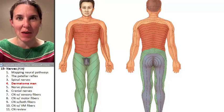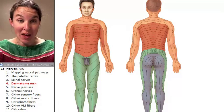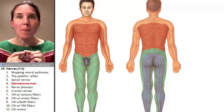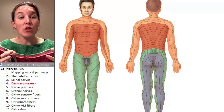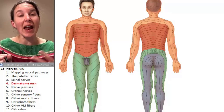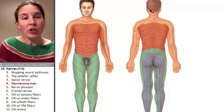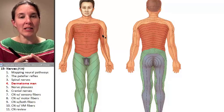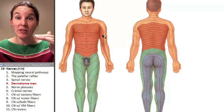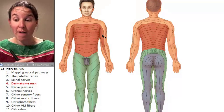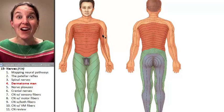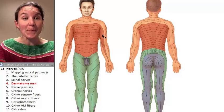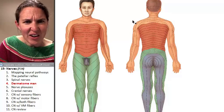This is my friend Dermatome Man. Dermatome Man is a map — a map of all the spinal nerves and the parts of each spinal nerve that actually innervate skin. You'll notice that he has stripes on him, and the stripes represent the different spinal nerves that are carrying some sort of sensory fiber in their spinal nerve highway to that area of skin.